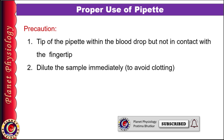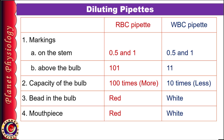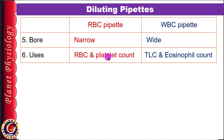Before winding up the session, let's go through the important points. Pipettes in the hemocytometer are used to dilute blood samples to facilitate cell counting. The RBC pipette has a larger bulb and a 101 marking above the bulb, while the WBC pipette has a smaller bulb and an 11 marking above the bulb. The RBC pipette has a red bead and red mouthpiece, whereas the WBC pipette has a white bead and white mouthpiece within the bulb. The RBC pipette has a narrow bore and the WBC pipette has a wider bore. The RBC pipette is used for RBC count as well as platelet count, while the WBC pipette is used for total WBC count and eosinophil count.